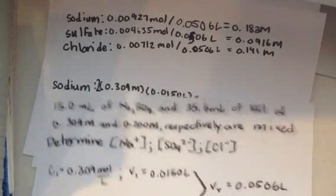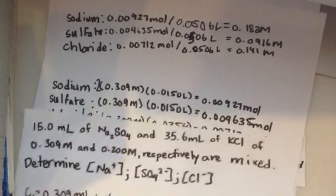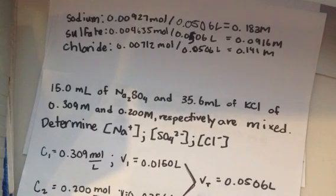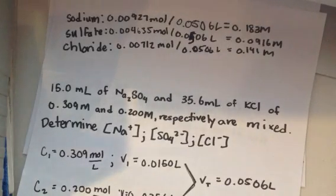And that is how you calculate multiple ion concentrations in a dilution problem. Hope it was useful — see you next time.